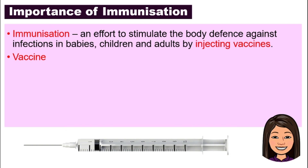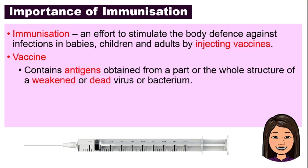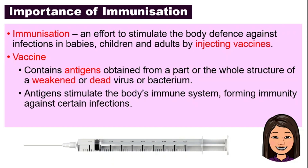So what is a vaccine? Vaccine contains antigens. In the last video, we talked about how antigens are foreign substances that try to get into our body. But the antigens obtained from a part or the whole structure of a virus or bacteria in a vaccine are already weakened or dead. So don't worry — it is safe.